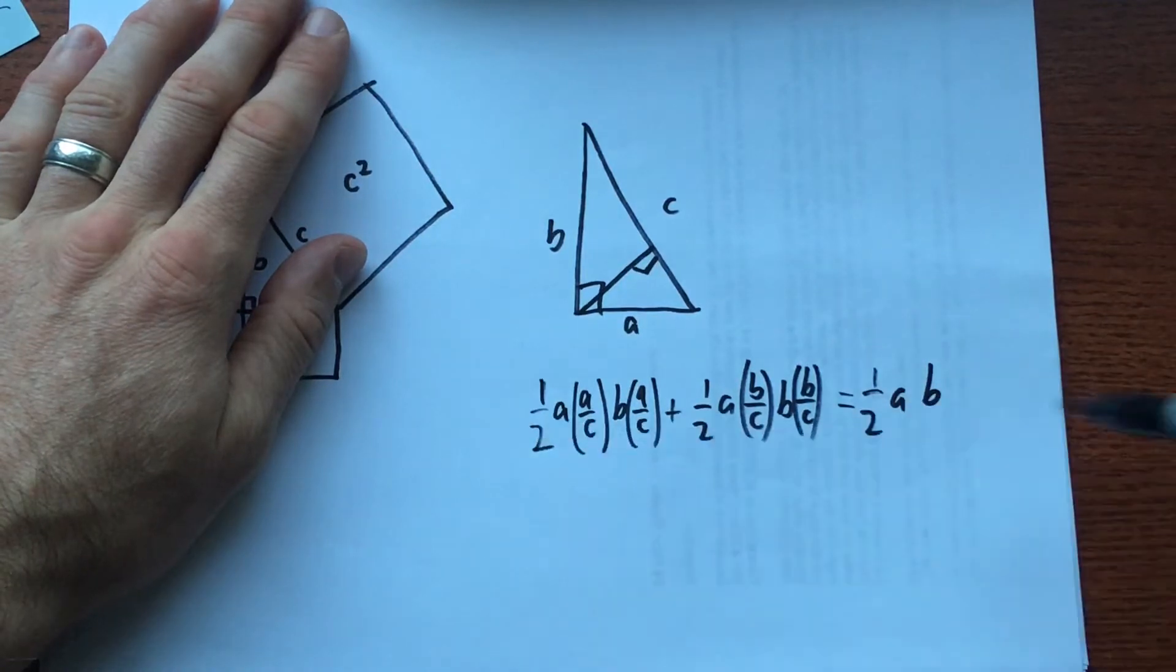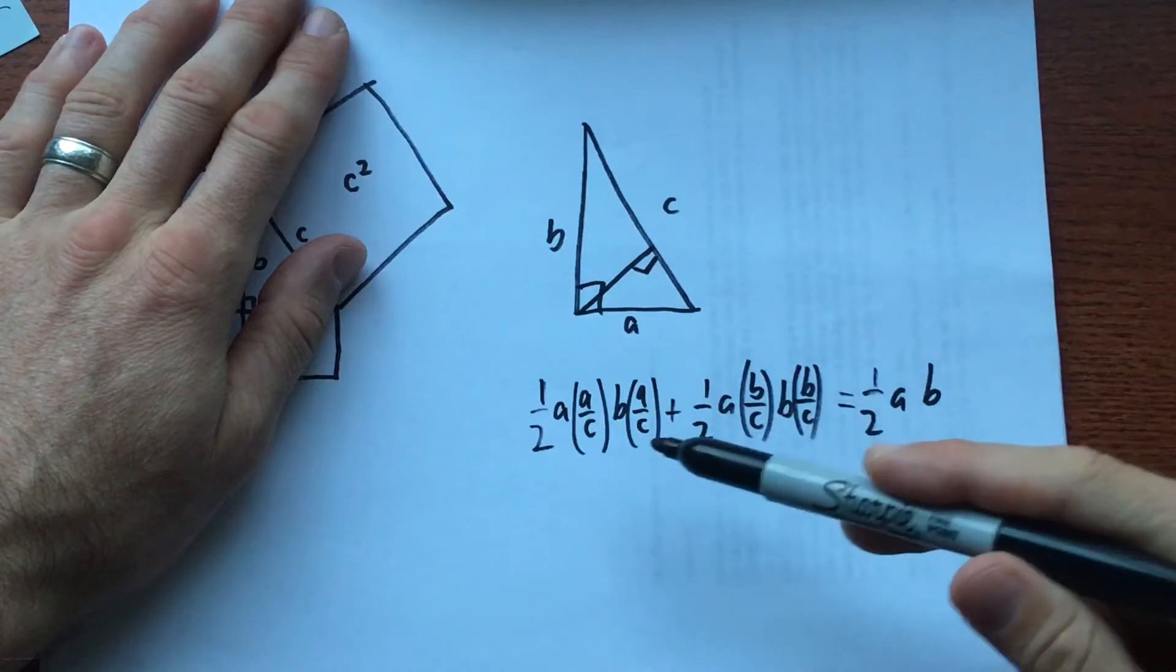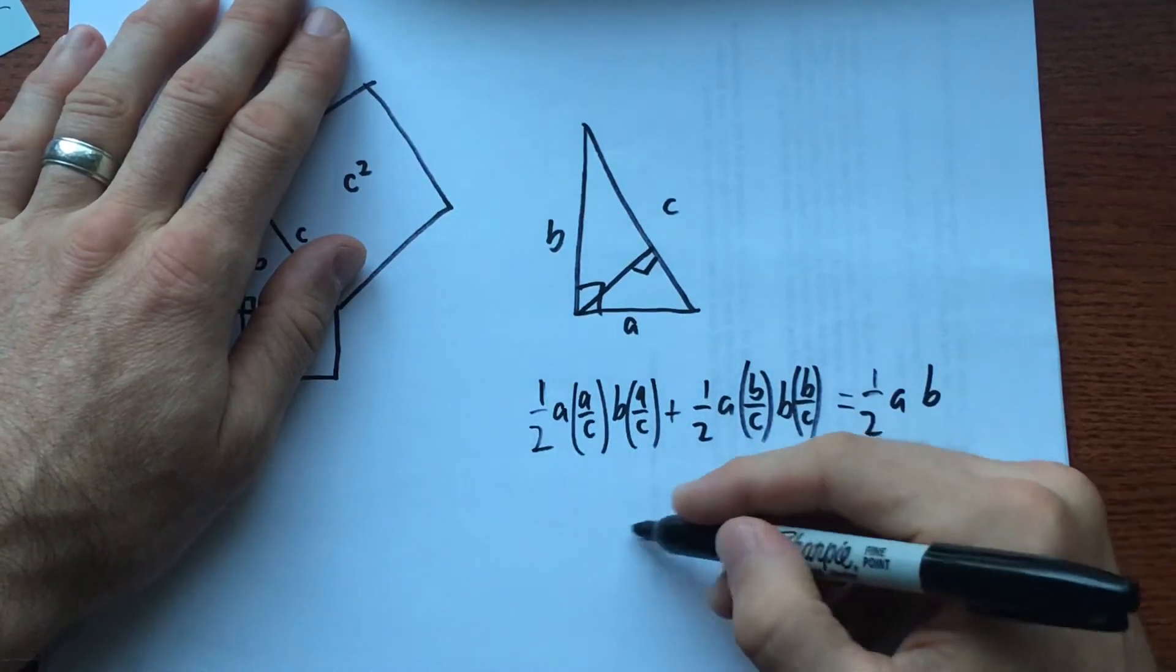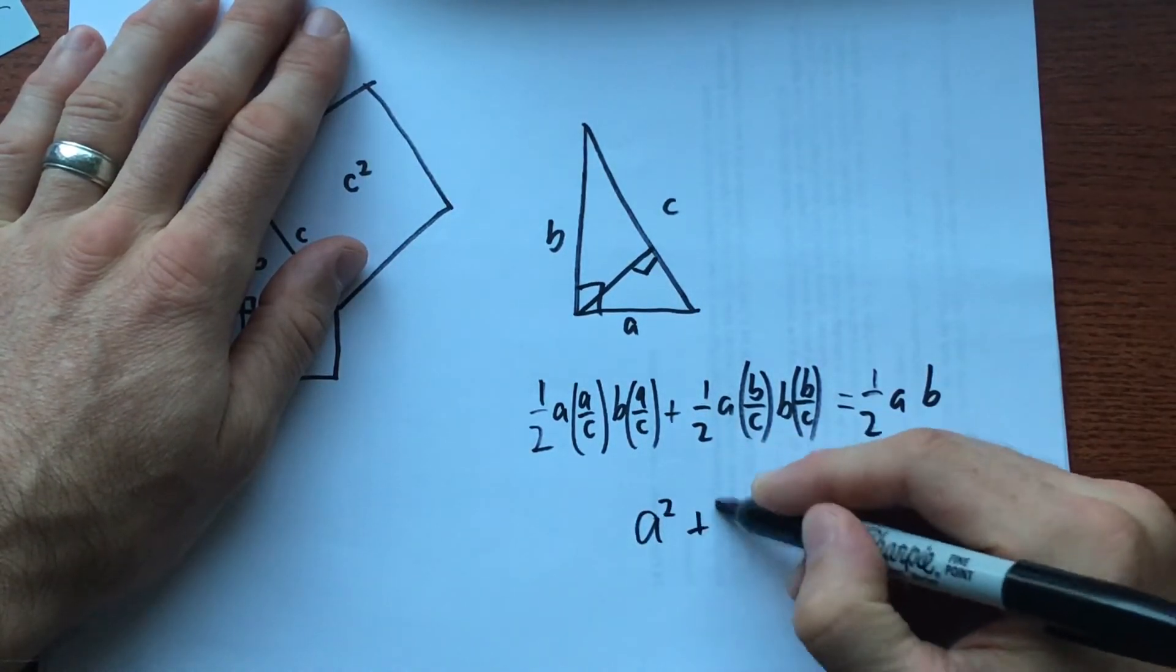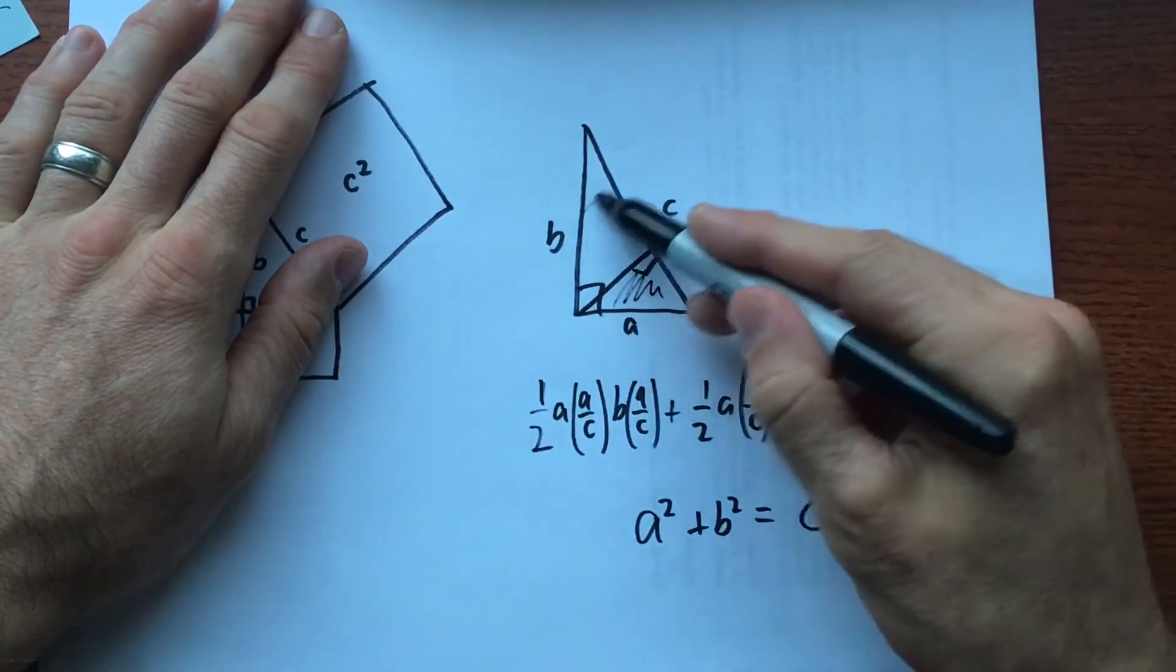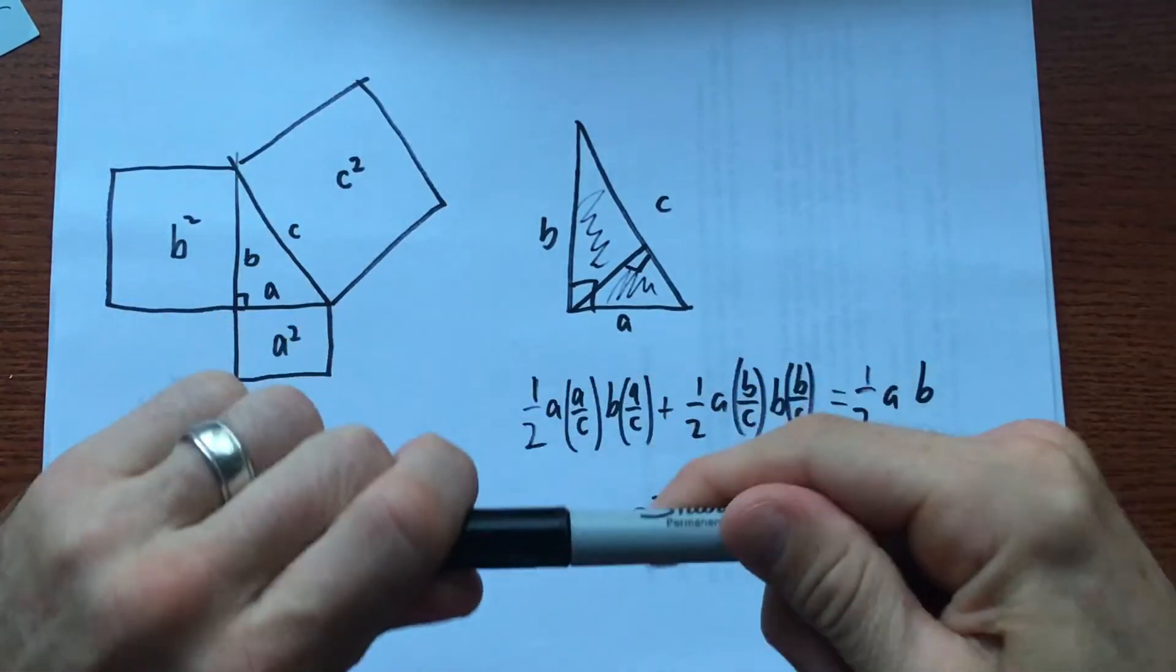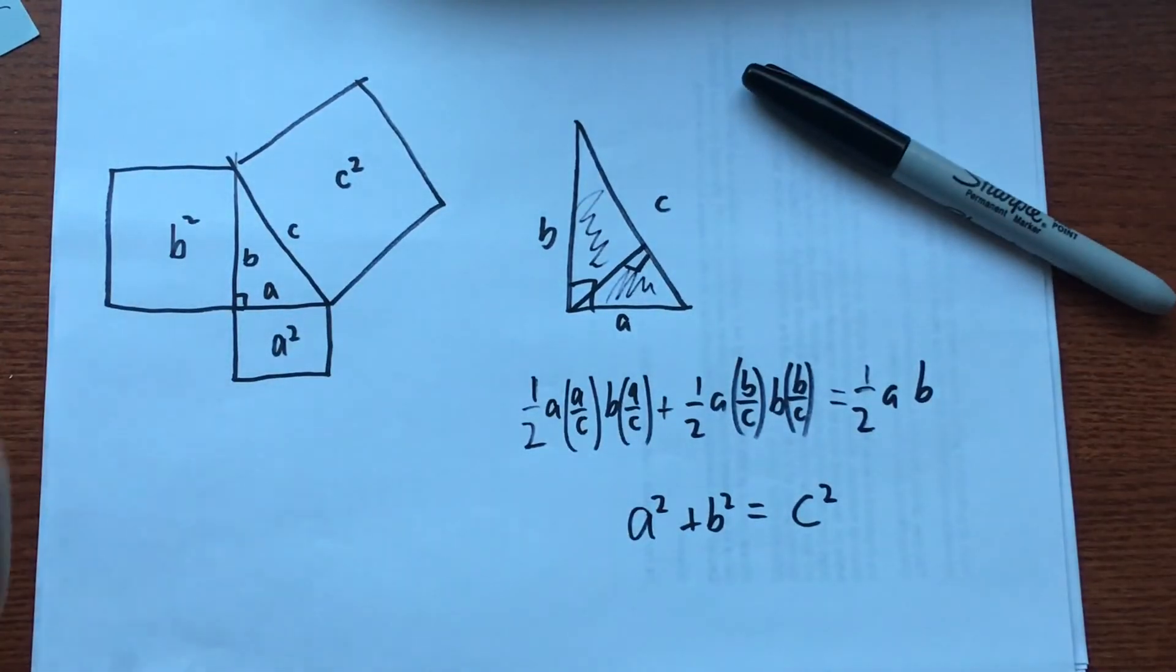So if we divide the whole equation by one-half a b and multiply through the denominator c squared, multiply through by c squared, we'll get a squared plus b squared equals c squared. So that says the area of this triangle plus the area of this triangle equals the area of the whole thing. And that's Einstein's proof of the Pythagorean theorem.